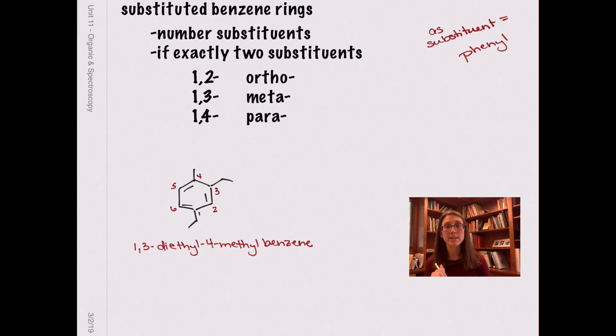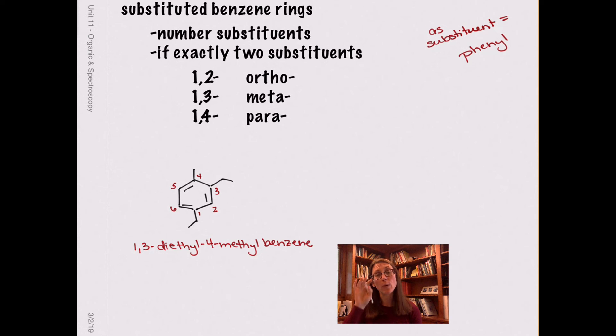So this molecule is 1,3-diethyl-4-methylbenzene. However, just so you know because you're likely to see it at some point, if a benzene has only two substituents, there is an alternative way of indicating where those substituents are placed. Is it 1,2 substitution, 1,3, or 1,4? And these can be called ortho, meta, and para substitutions. I am perfectly happy with you just numbering things, but I want to make sure you're aware that that alternative, something like this being ortho-bromochlorobenzene, is out there and you're likely to see it at some point.